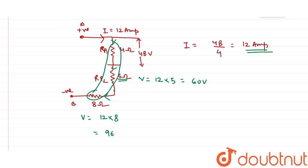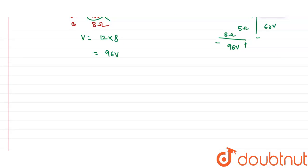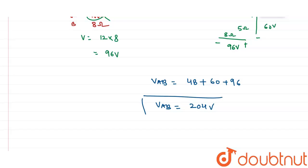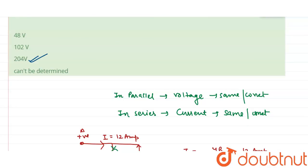So we have three voltages: 48 volts across the 4 ohm (Rp1), 60 volts across the 5 ohm (Rp2), and 96 volts across the 8 ohm. The total potential difference across A and B equals 48 + 60 + 96 = 204 volts. Checking the options, the third option — 204 volts — is the correct answer.